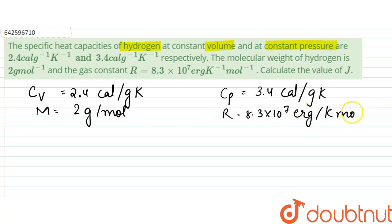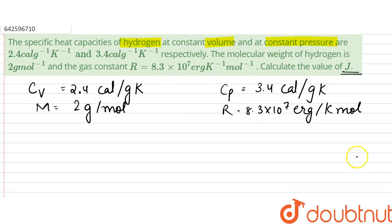We have to calculate the value of J. Here, what we could say is that since Cp minus Cv is equal to 1 calorie per gram Kelvin, the difference in molar specific heat would be Cp into M minus Cv into M is equal to 1 into 2, which is